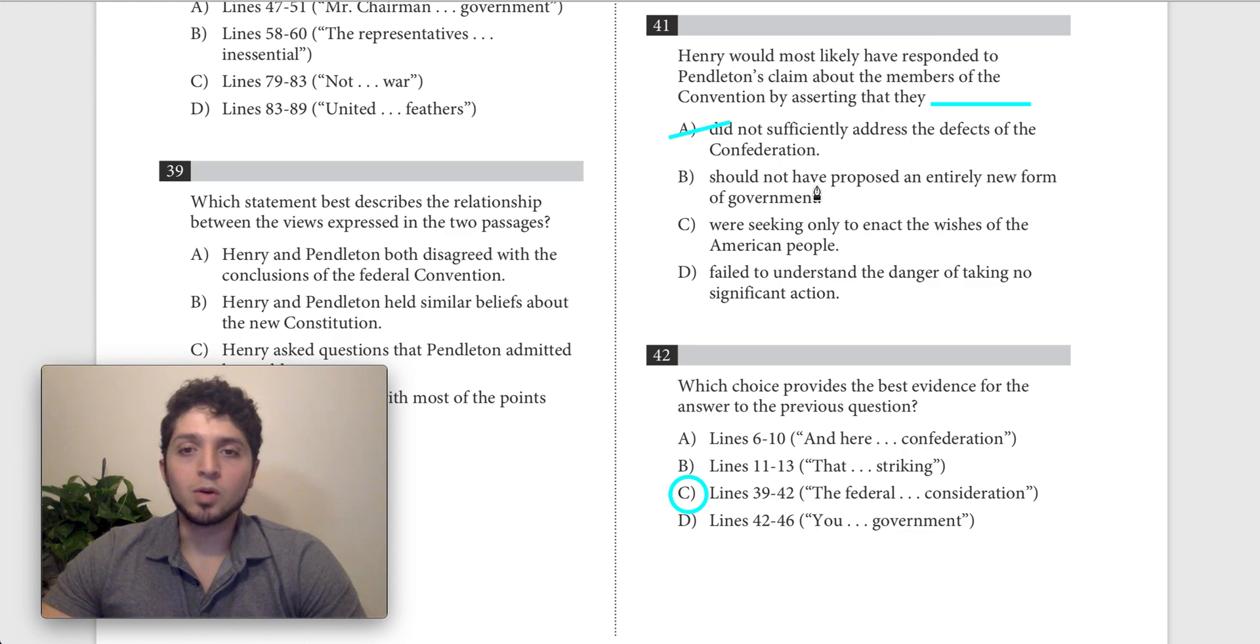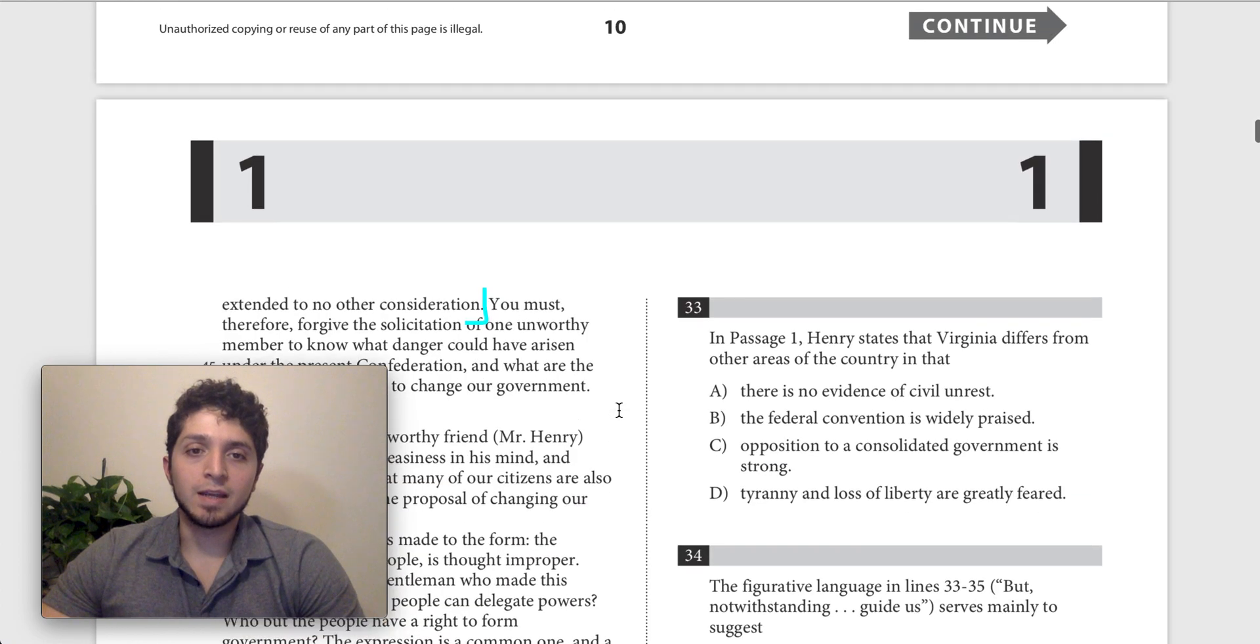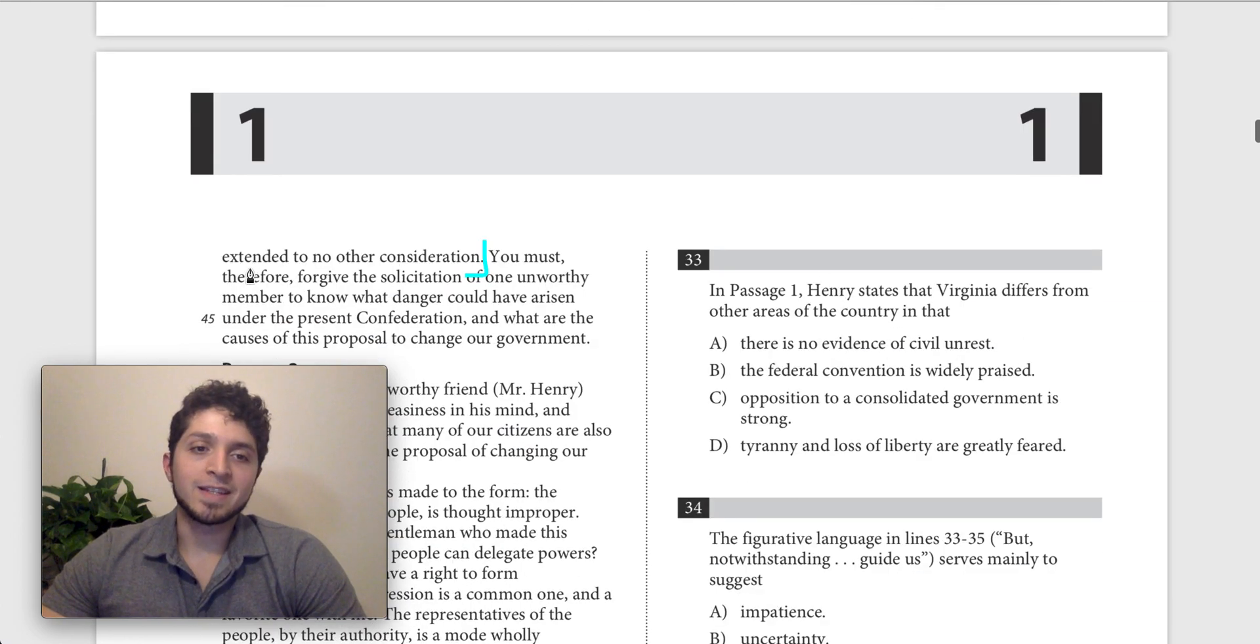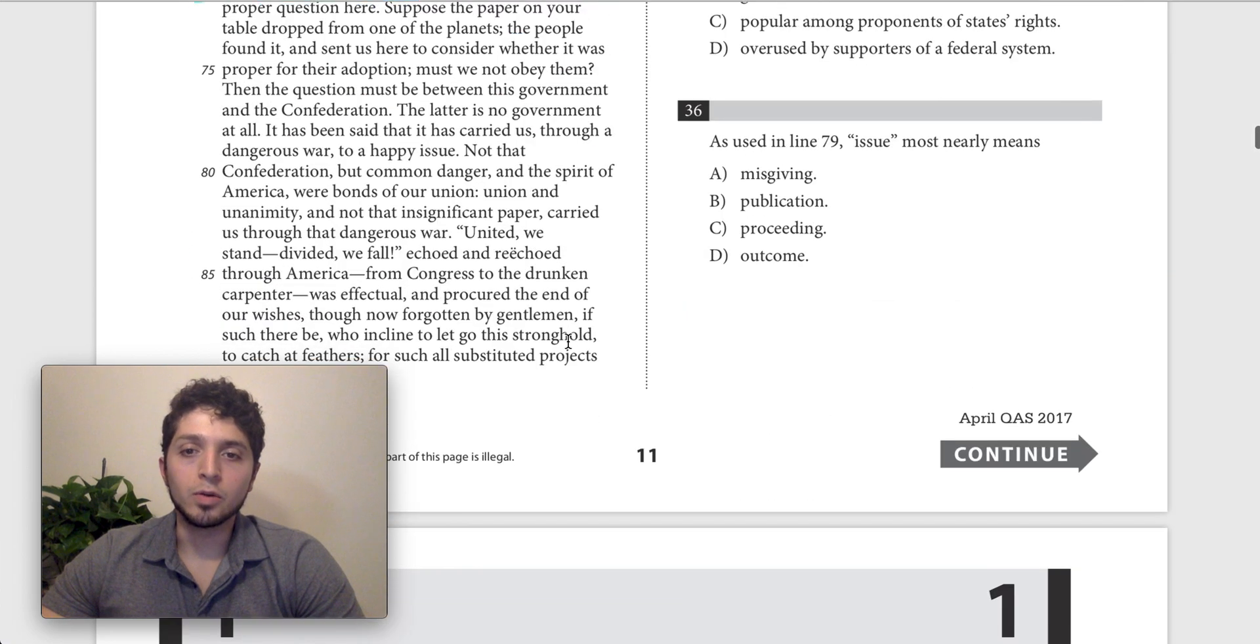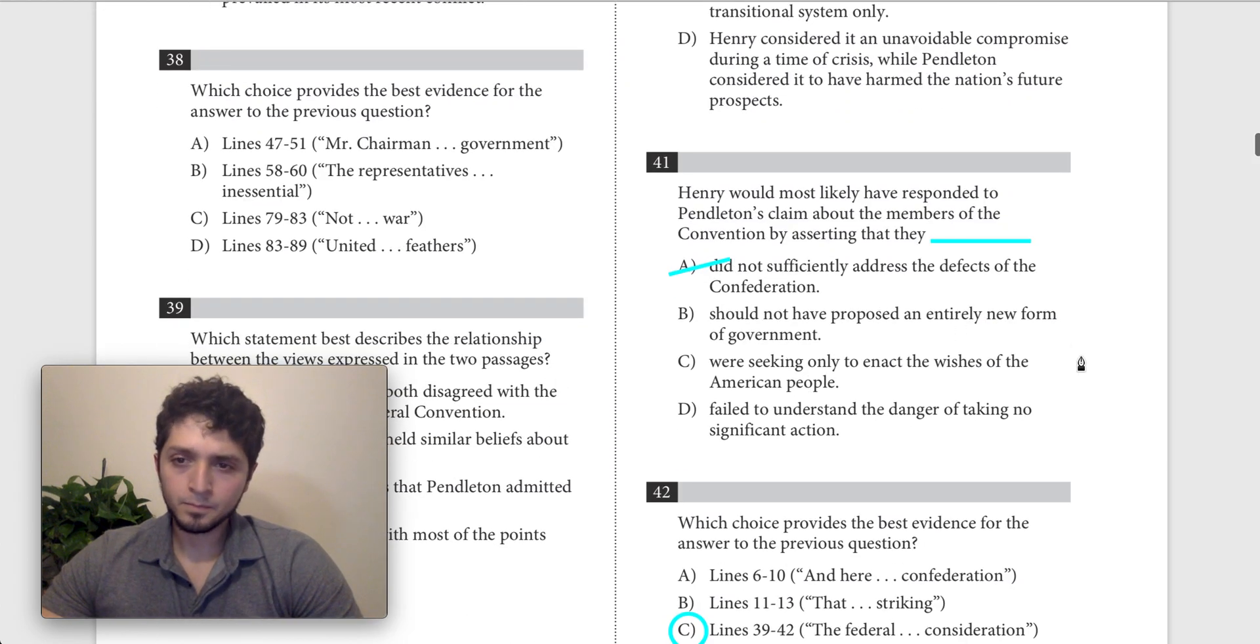Then B says they should not have proposed an entirely new form of government. I think that's pretty strong. It matches C. All they should have done was amend the old system. They extended to no other consideration. So they shouldn't have proposed an entirely new government, which is what Pendleton said they were okay doing. So this is good.